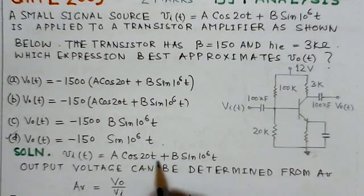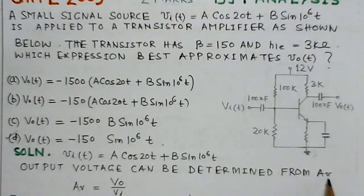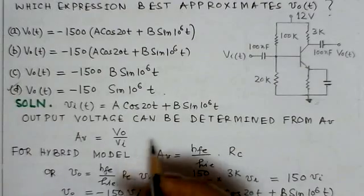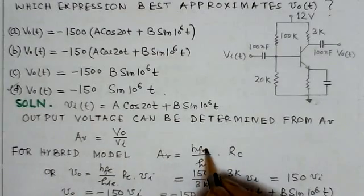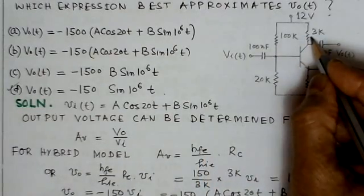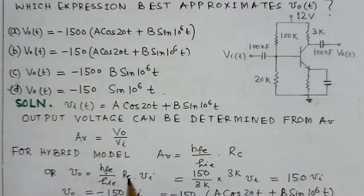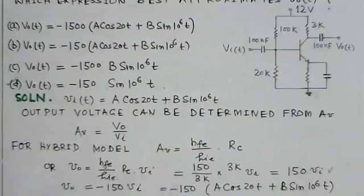We know that V_i(t) = A cos(2t) + B sin(10^6 t). We can determine the output voltage from the gain of the stage, the gain of this common emitter amplifier A_v. The gain is given by A_v = V_o/V_i. For the hybrid model, A_v = (h_fe/h_ie) × R_c, where R_c is the collector resistance. So V_o = (h_fe/h_ie) × R_c × V_i. We know h_fe = 150, h_ie = 3kΩ, R_c = 3kΩ. So we get V_o = 150 V_i.